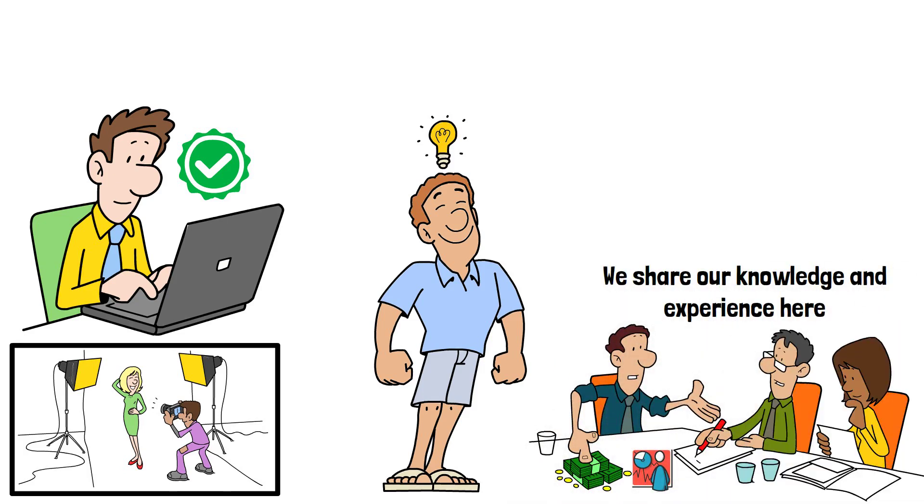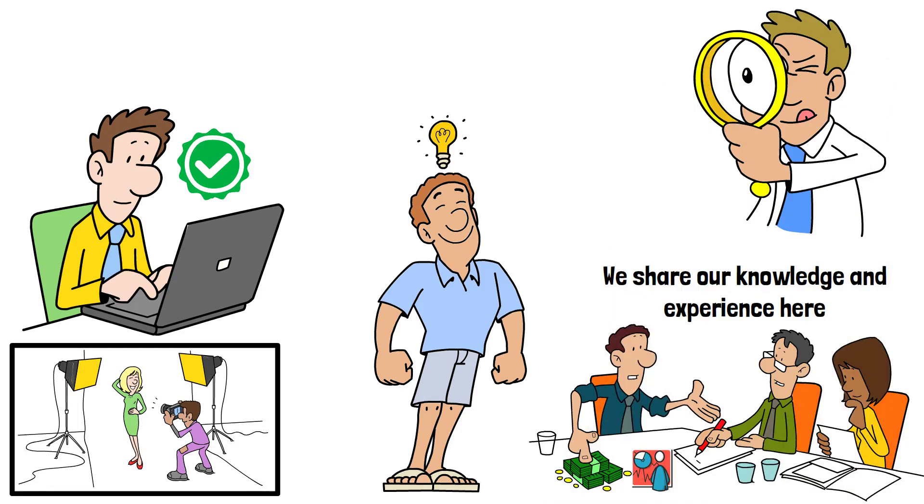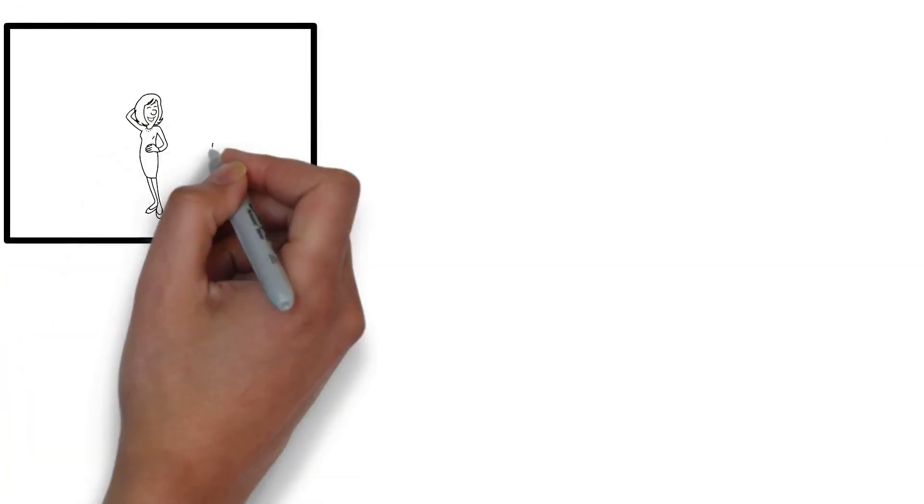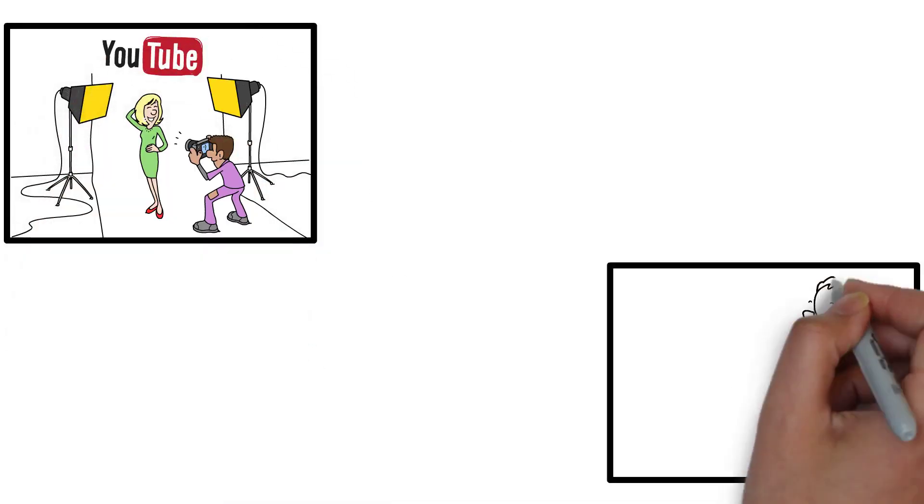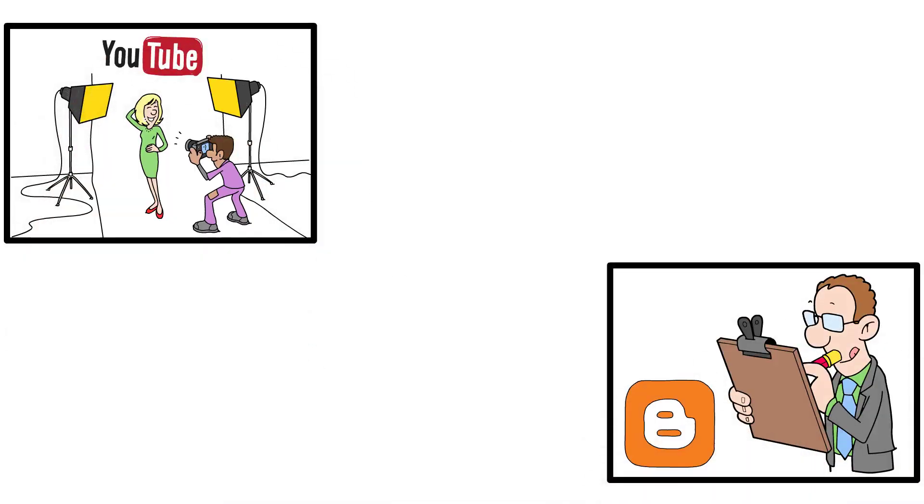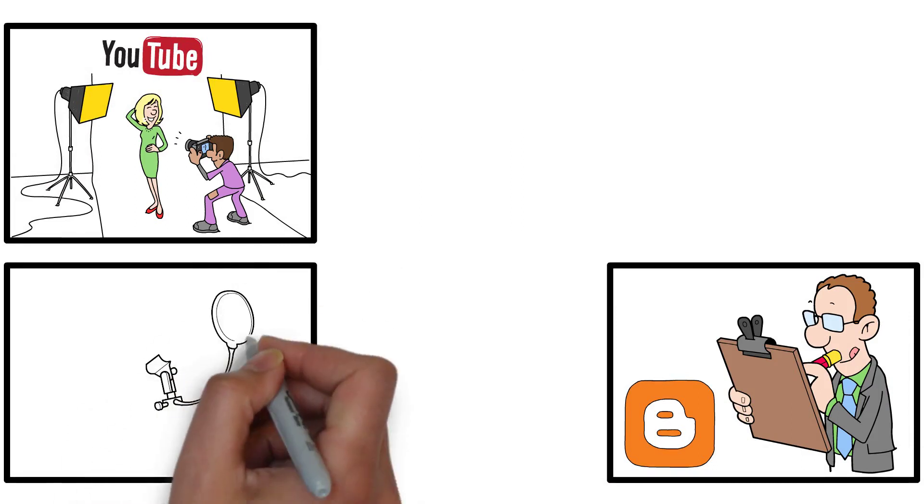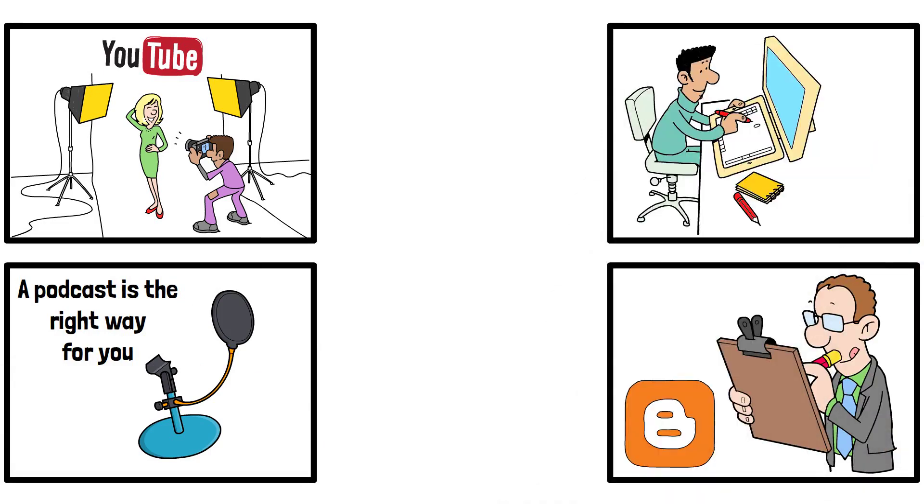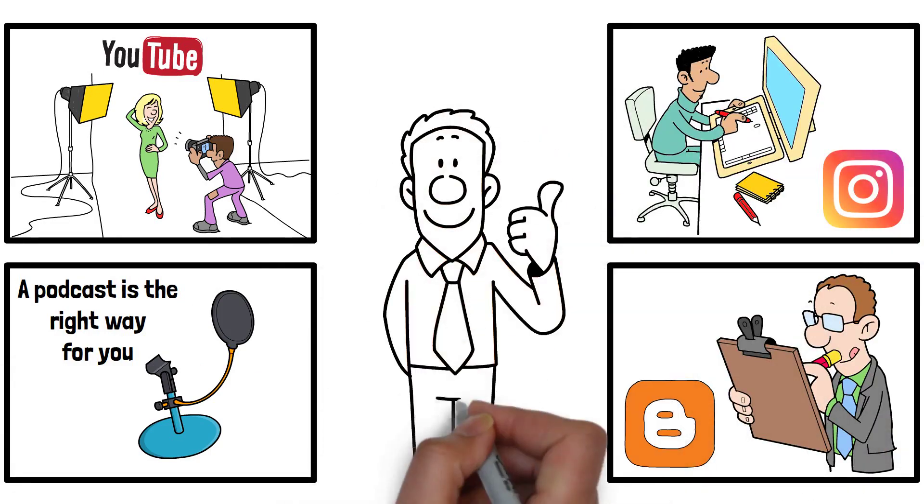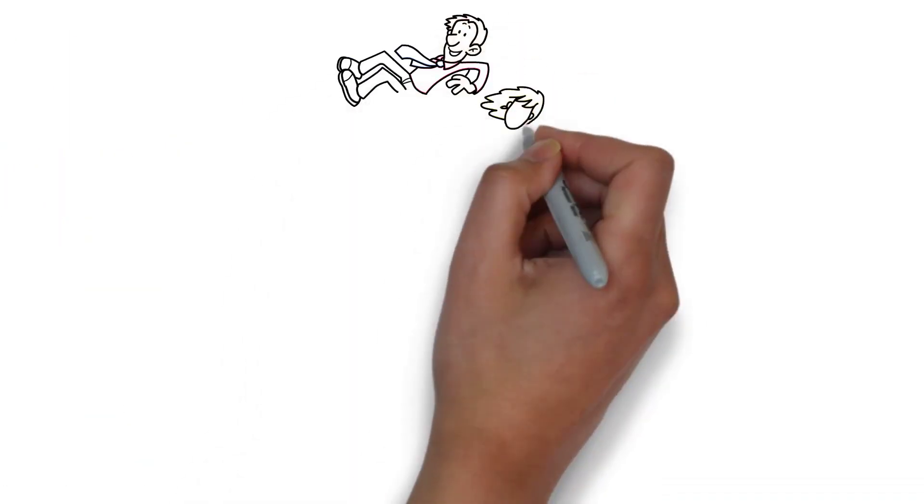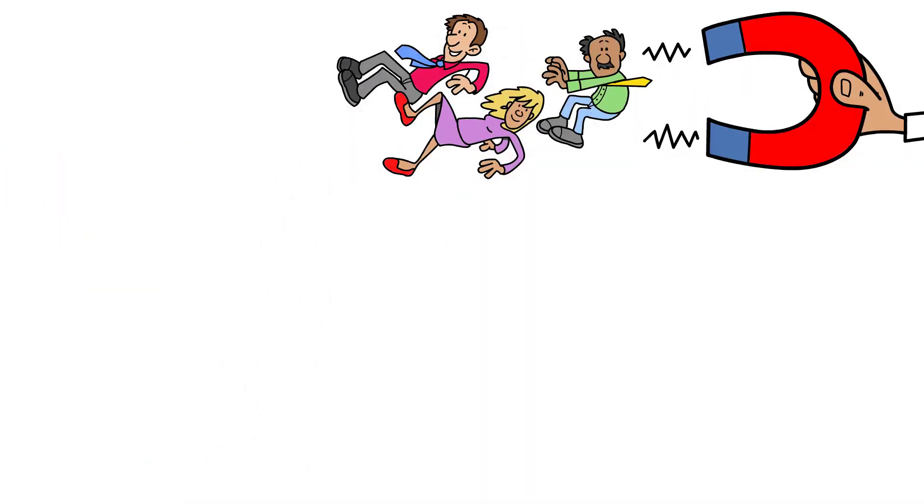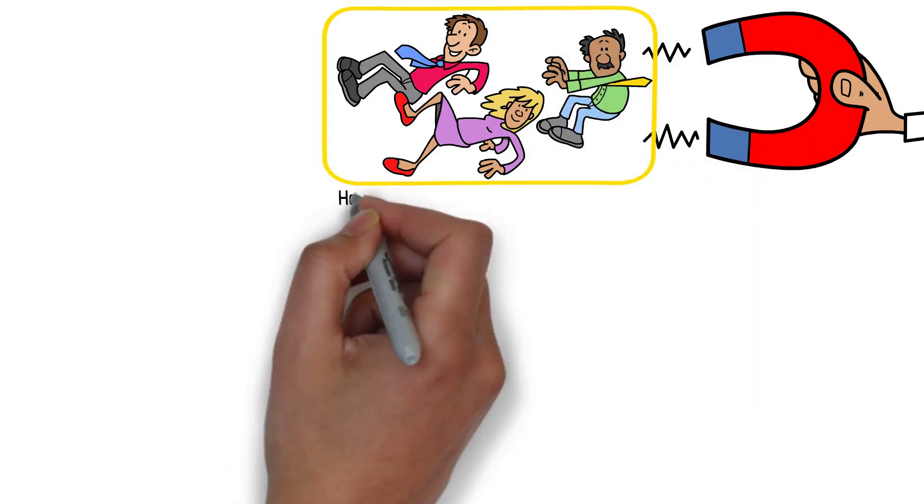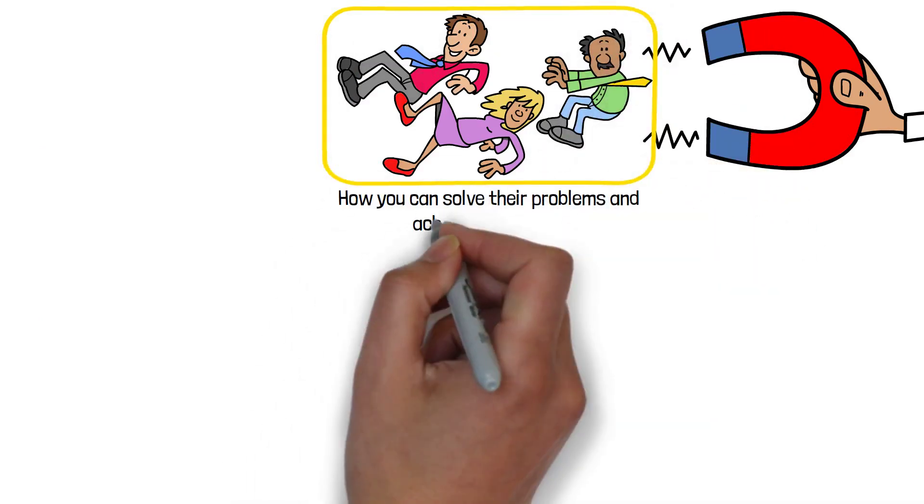To get started as a content creator, you should choose a platform. Which one is up to you? Do you like to stand in front of the camera and edit videos? Then YouTube is a good choice. Do you like to write? Then a blog is a good choice. Do you prefer just to record your voice? Then a podcast is the right way for you. Do you like to design pictures? Then Instagram is the way to go. The possibilities are endless and completely up to you. The point is to build a brand that appeals to a target group with a specific topic, and shows this target group how you can solve their problems and achieve their goals.